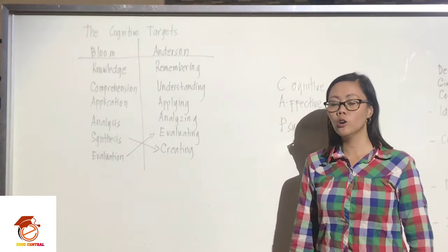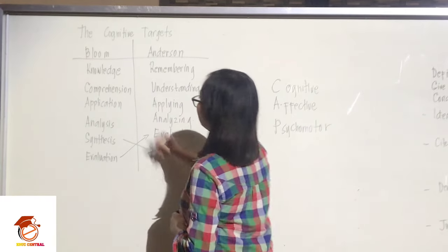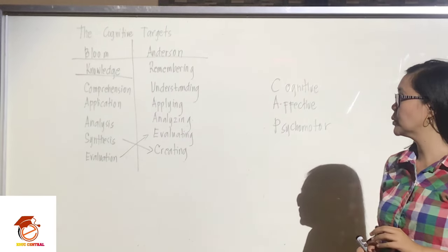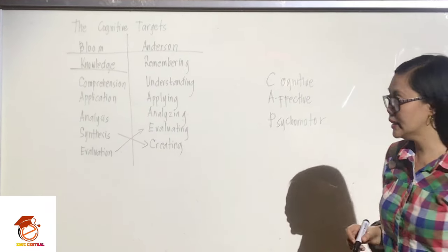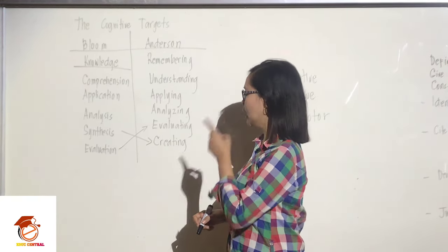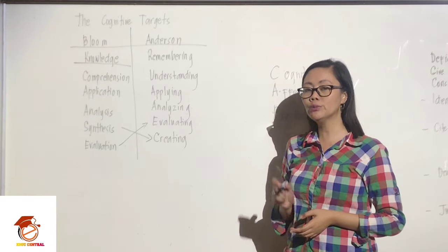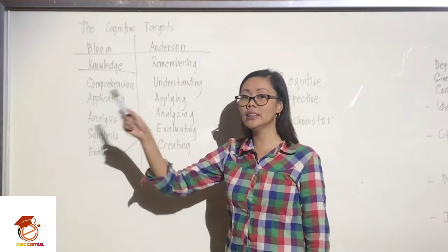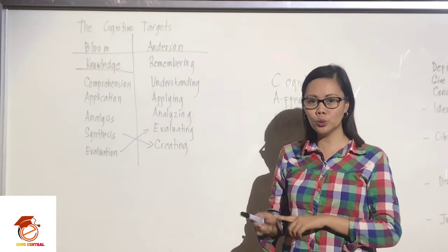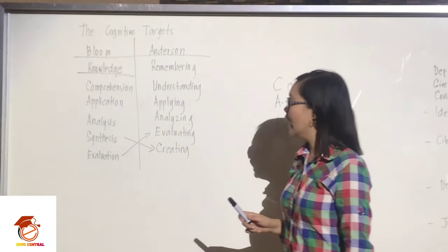We are going to discuss cognitive taxonomy in reference to Benjamin Bloom. The first level is knowledge — knowledge is the foundation of all learning. They say it is the lowest form of learning, but it is still the foundation of all learning processes because you will not be able to synthesize, analyze, apply, evaluate, or even comprehend if you cannot recall the information.